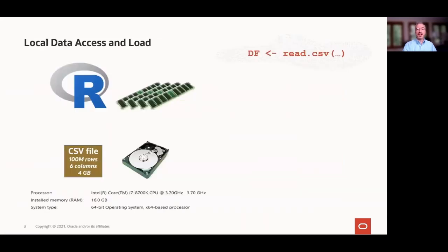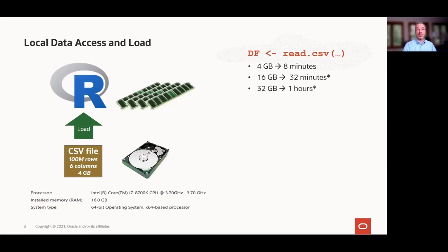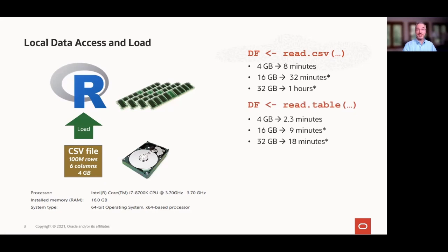The statistic that 87% of data science projects fail to make it to production, or only 20% deliver business outcomes — deployment complexity contributes to these statistics. There are also concerns about data security, backup and recovery — how are copies of data managed and secured? Data scientists commonly deal with multi-gigabyte datasets. Loading a 4 GB CSV file of 6 columns and 100 million rows on a gaming PC with 16 GB RAM using read.csv took 8 minutes.